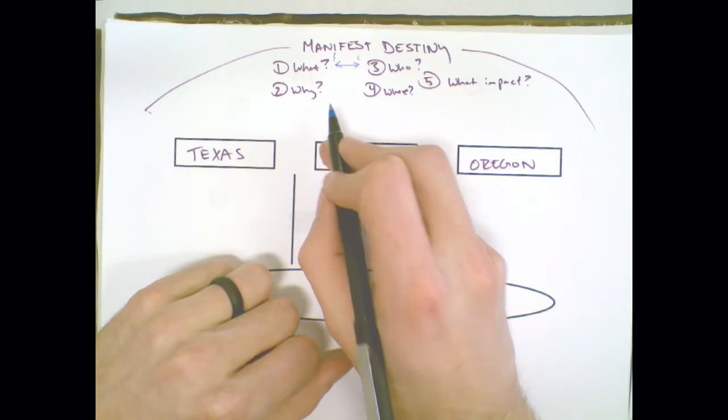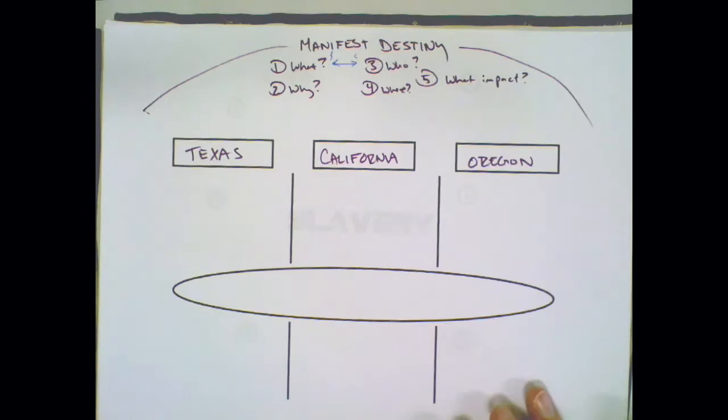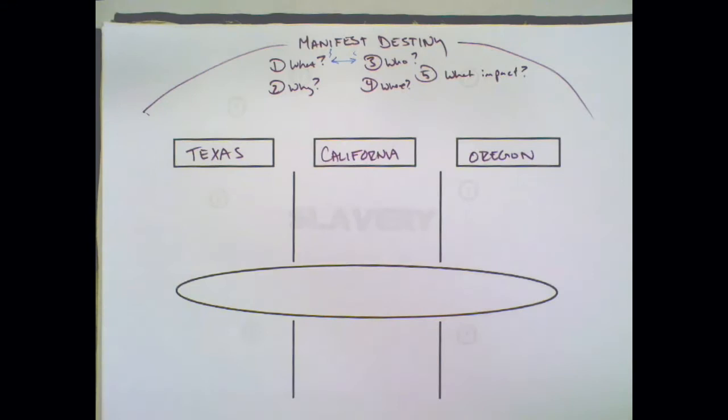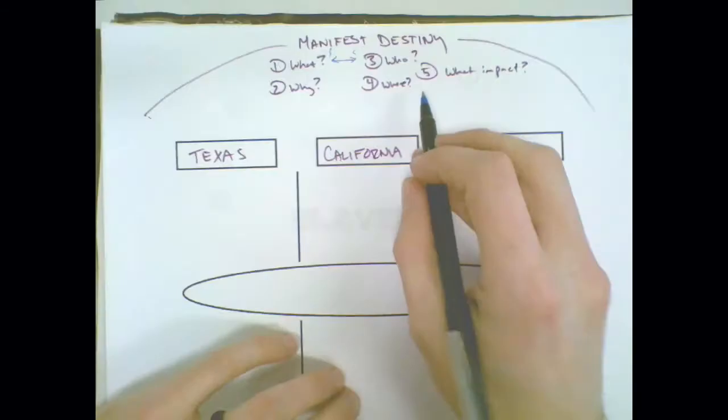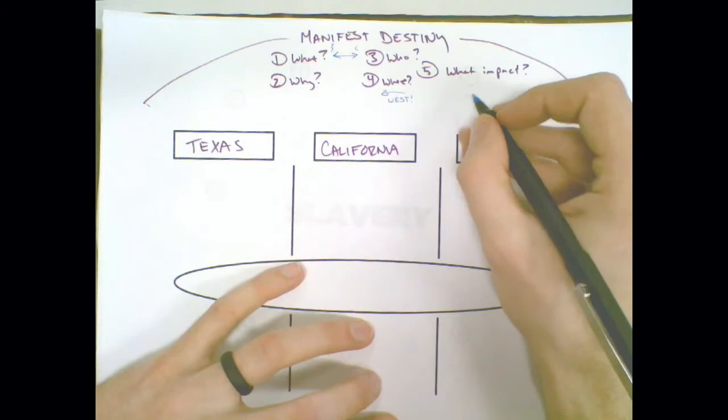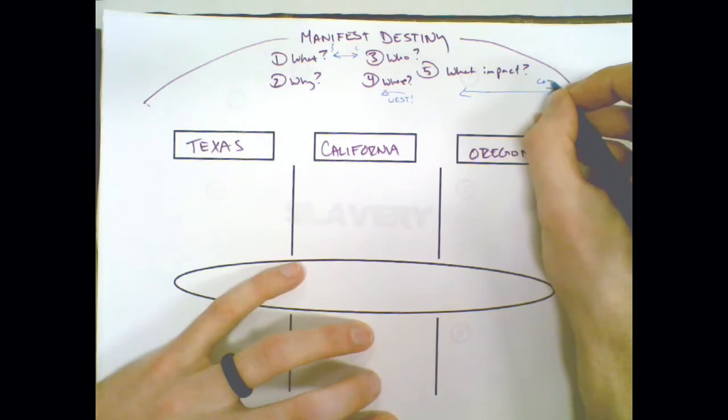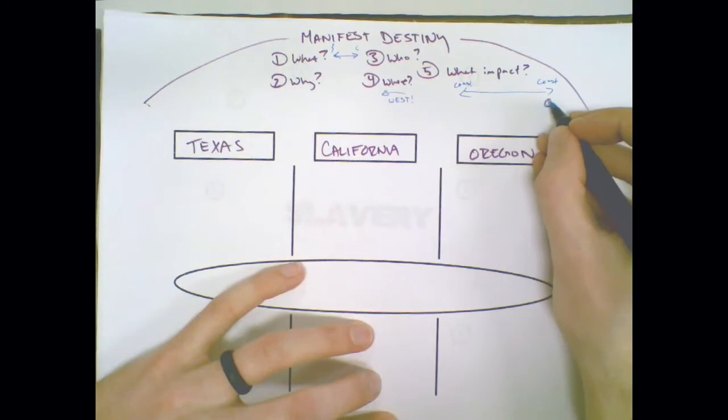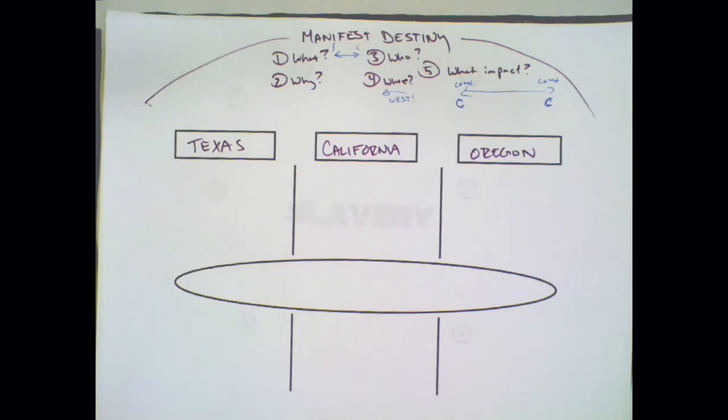To begin here with what is it: Manifest Destiny is the idea that we should expand from sea to shining sea or from coast to coast, and it's the idea that this is God's plan for us. Why is it so important? People believe it will give them a better life. Who goes? We've got settlers, mountain men, people going to Mexico, and the Mormons. Where do they go? West. The impact is that the United States will have gone from coast to coast.